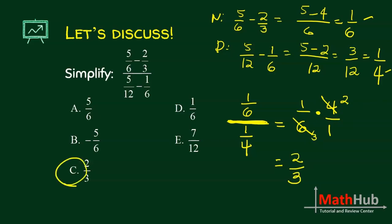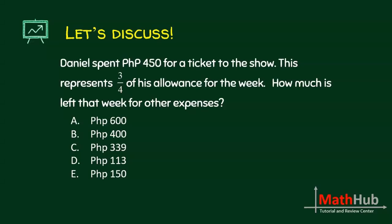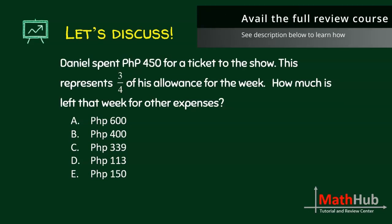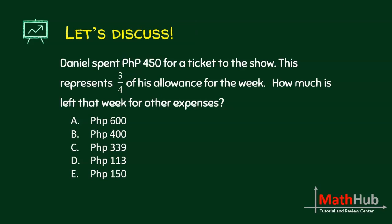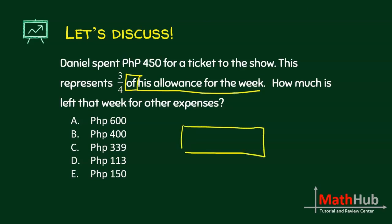Letter C. Next problem: Daniel spent 450 for a ticket to the show. This represents 3/4 of his allowance for the week. How much is left that week for other expenses? You have to know first which quantity to represent by your box. If you have fractions, you represent the phrase following the 'of' phrase — so this is his allowance.